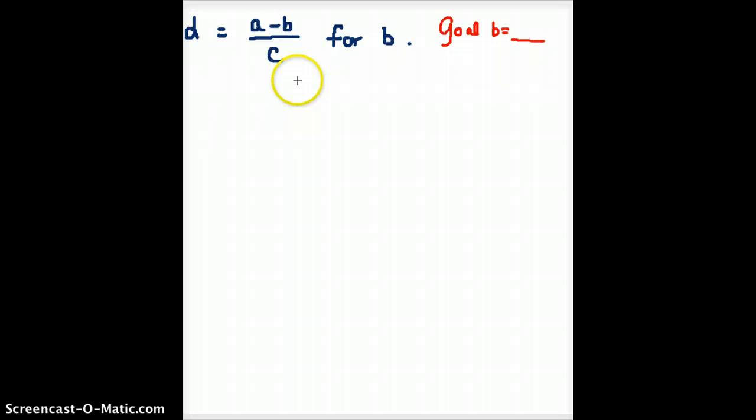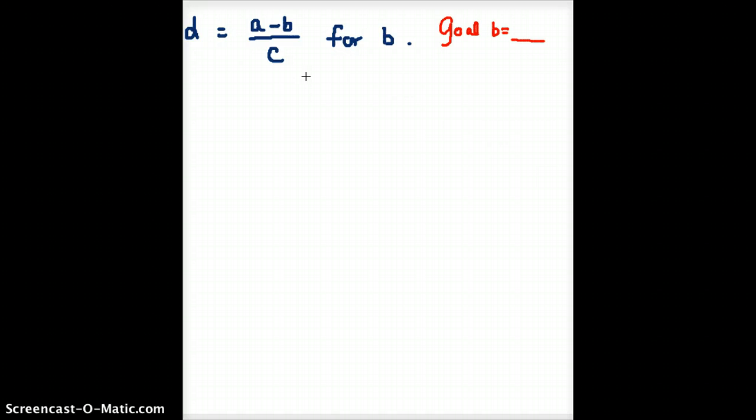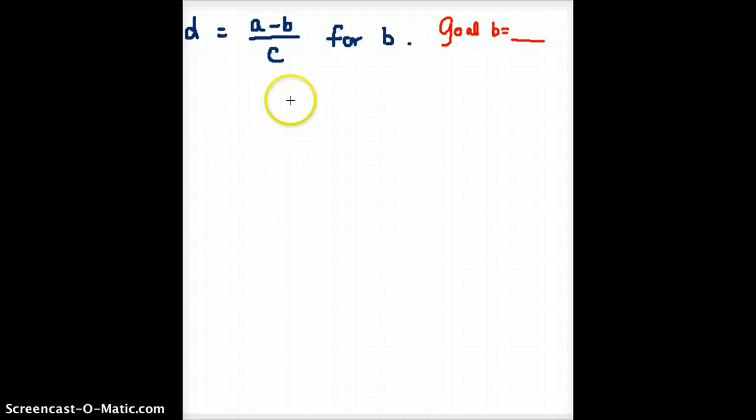If there were more than one B in the problem, we could not have B on the left and the right. We'd have to get one B in the entire problem. In this problem, there is only one copy of B, so we're okay there.